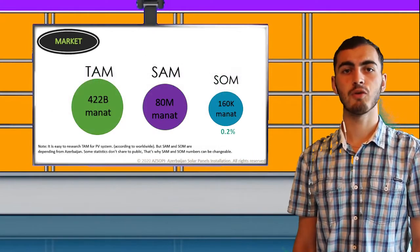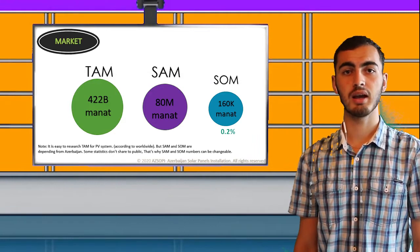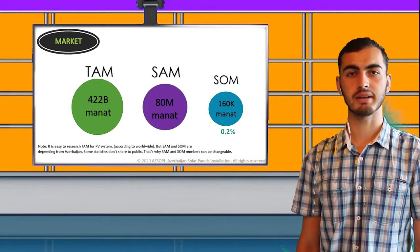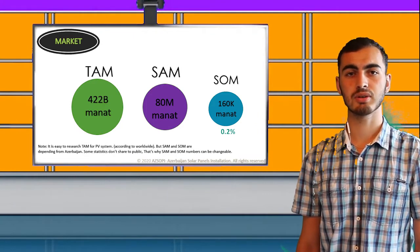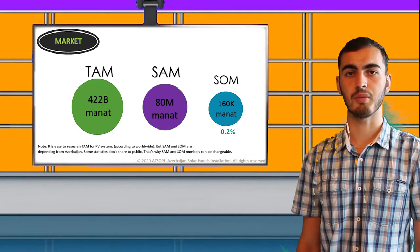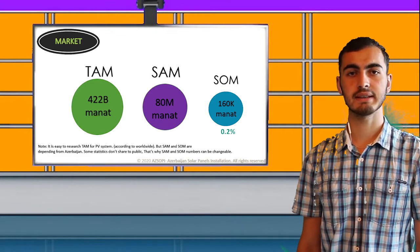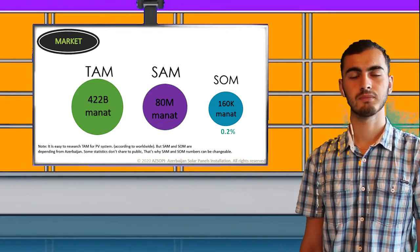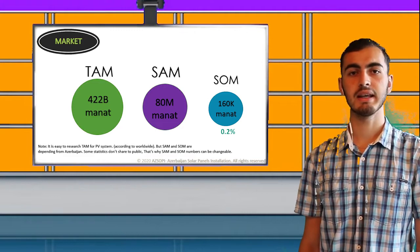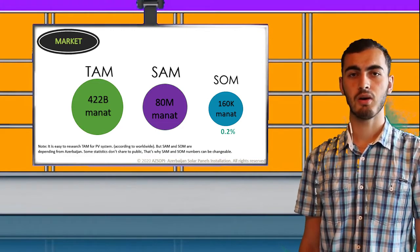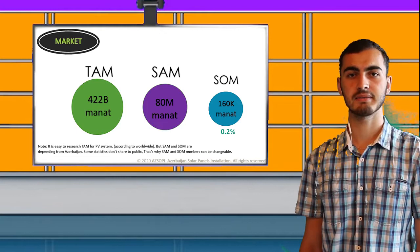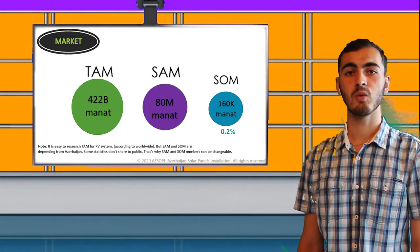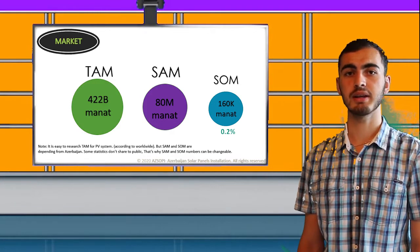Total available market is 422 billion manat and USA has an extremely large share from this market. Although the market is large, it is not realistic to transport PV systems to other countries from Azerbaijan. Transport taxes, expenses and other issues cost bigger than our revenue. Serviceable available market is 80 million manat. Of course, that's based on interests. Actually, we can reach it, but it's unlikely that our company will be able to capture this market very quickly.